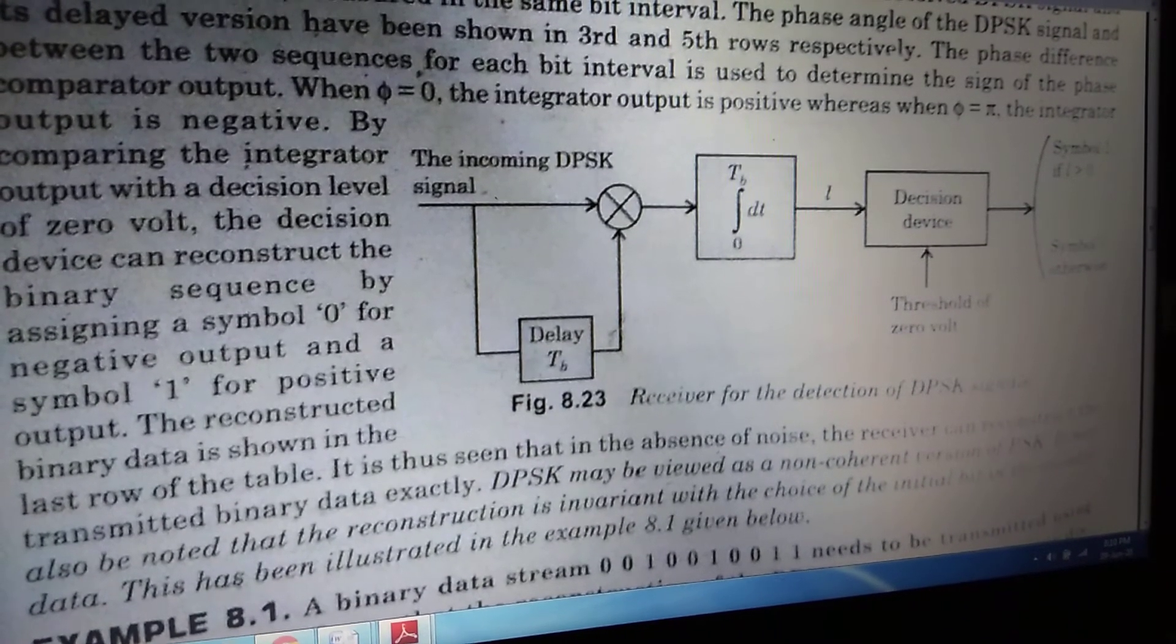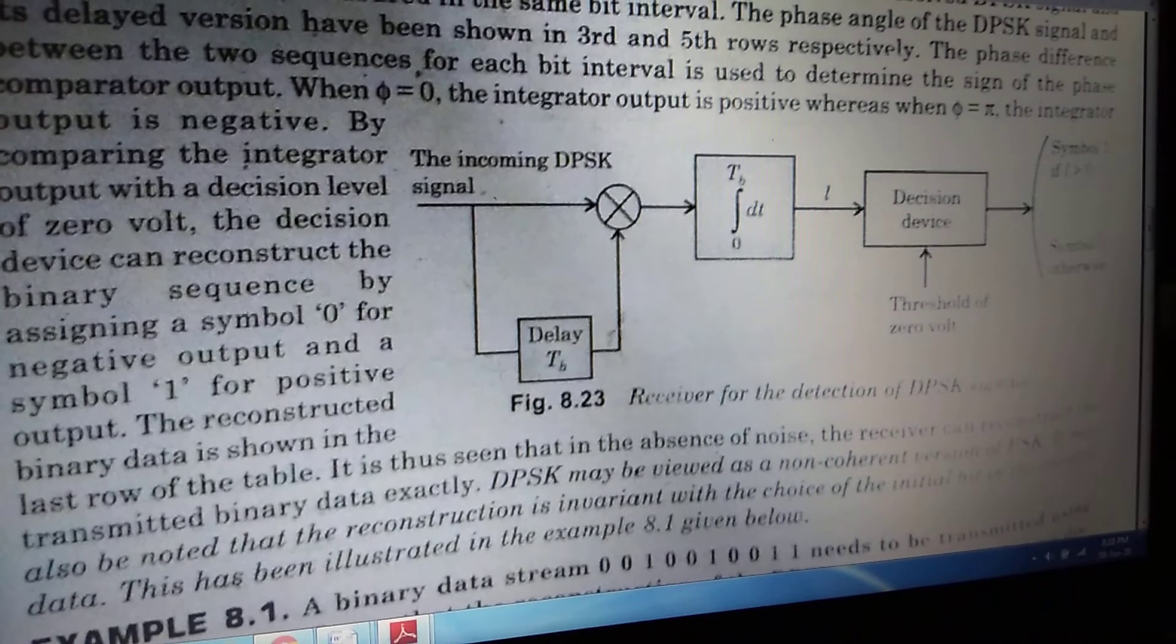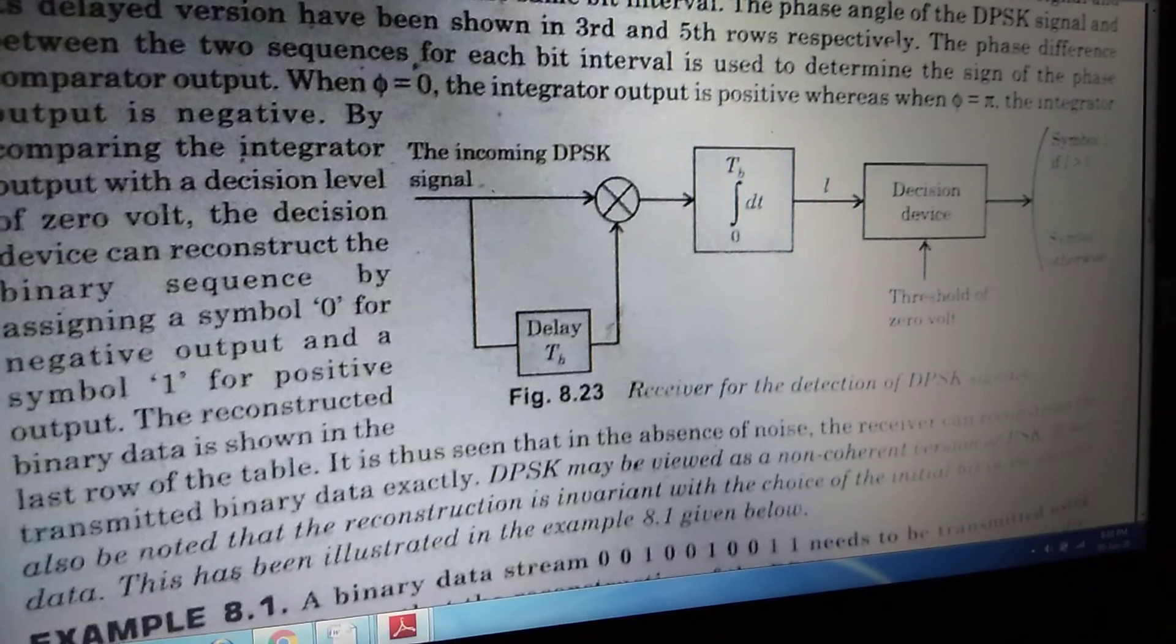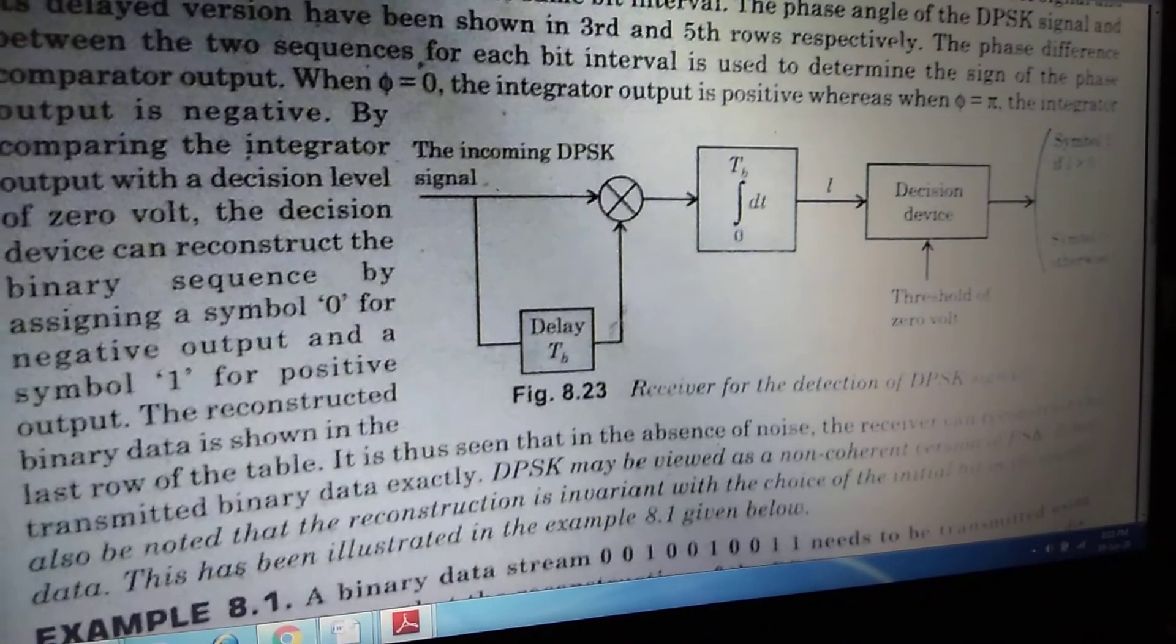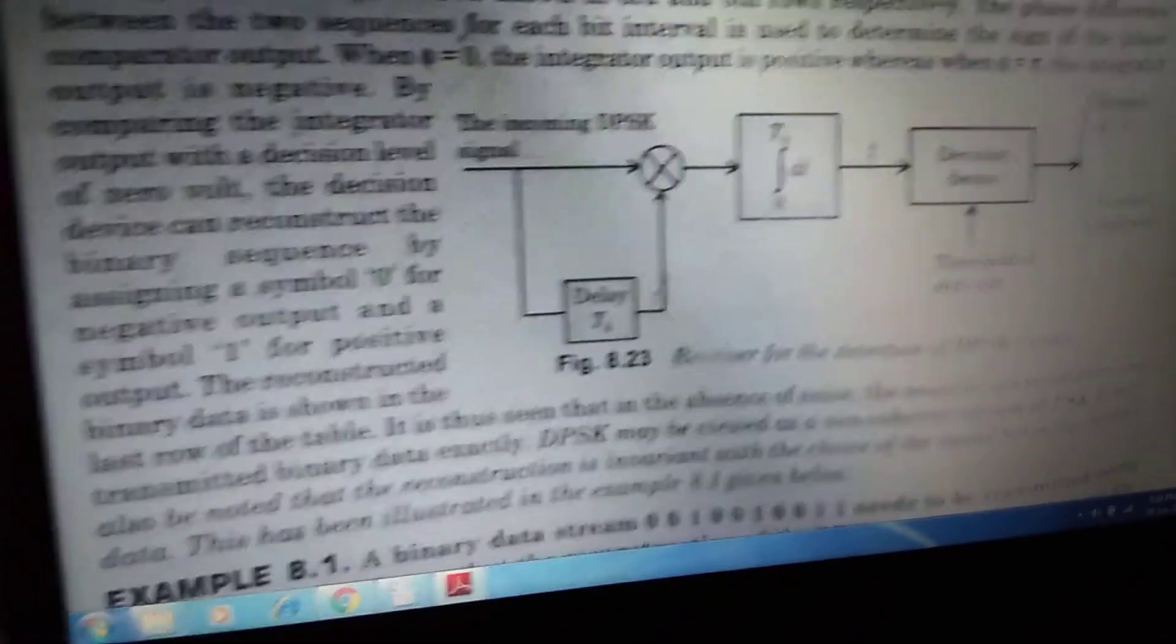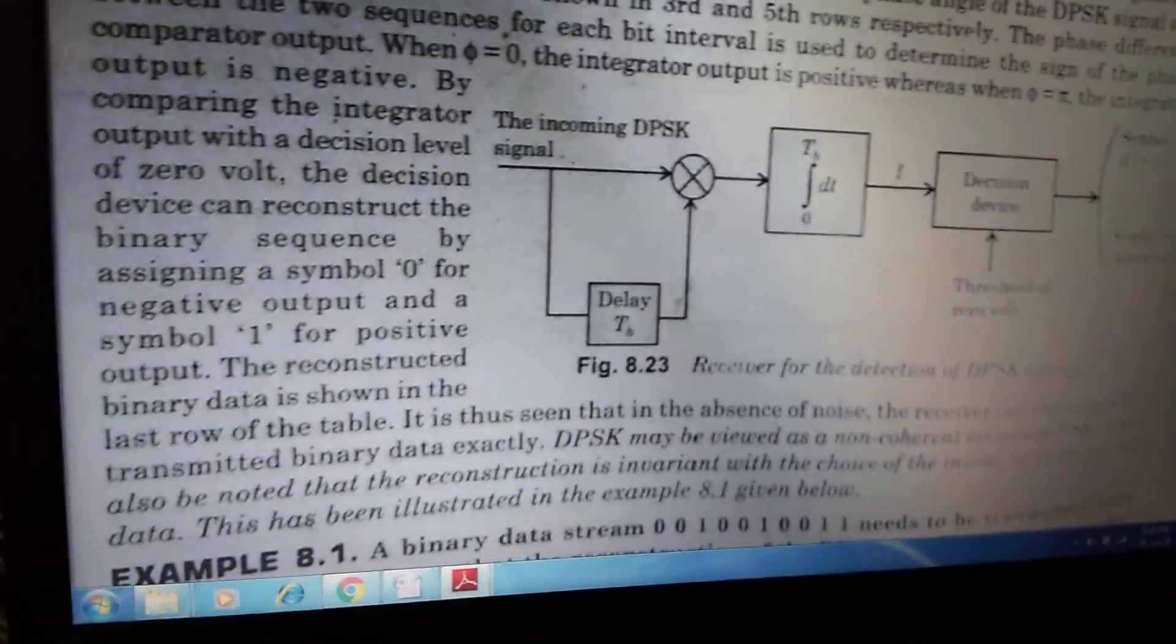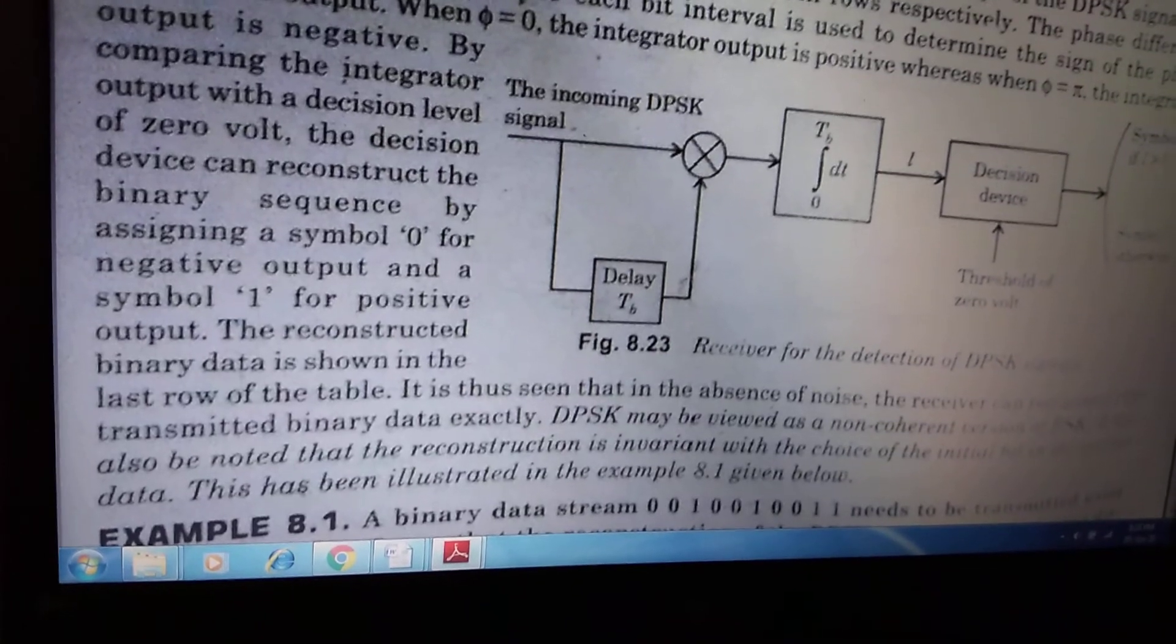After that, we are getting a particular output that, according to this block diagram, we are taking as small l. This small l will be given to a decision device. And below the decision device, we are finding out one threshold at 0 volt. Depending upon the value of this particular threshold voltage, the decision device will give us a value of 1 or 0.